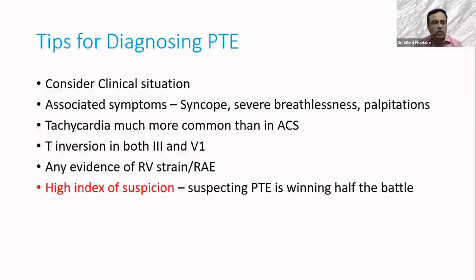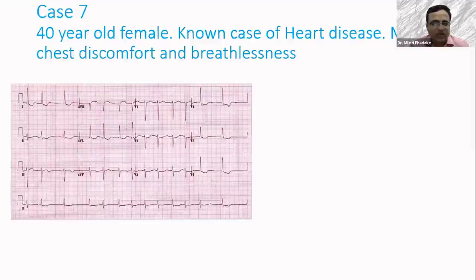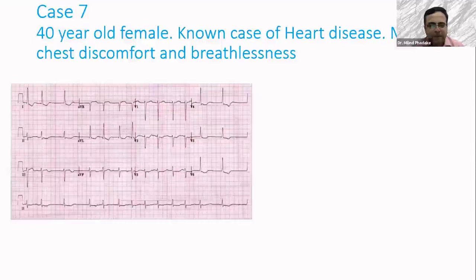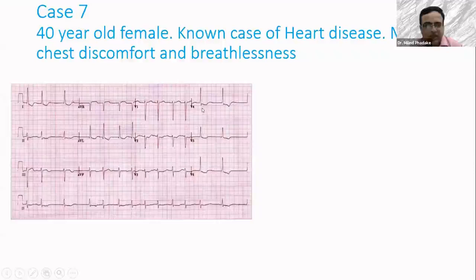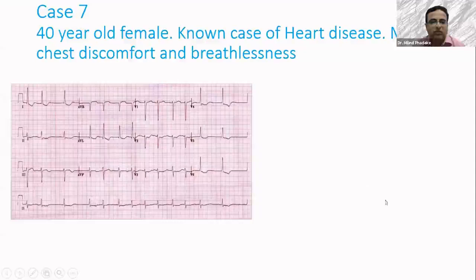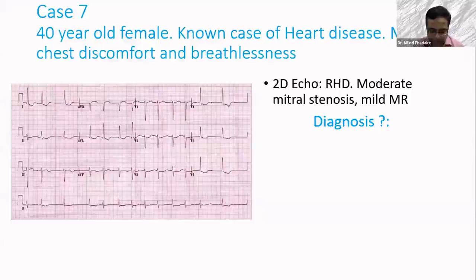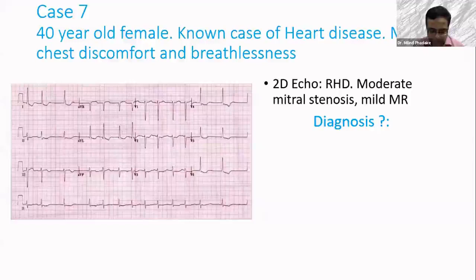Another interesting case: a 40-year-old female with known valve disease on medications, presenting with mild chest discomfort and breathlessness. The ECG shows irregular rate rhythm with no P waves — she is in atrial fibrillation. There are a lot of ST depressions in leads V4, V5, V6, lead 1, and AVL. This is atrial fibrillation with ST depression changes. However, the patient is a known case of rheumatic heart disease with mitral valve disease on digoxin. The ECG changes are secondary to digoxin effect. Unlike ischemic ST depressions, ST depressions in a patient with digoxin have a typical reverse tick sign — the reverse of a tick mark.